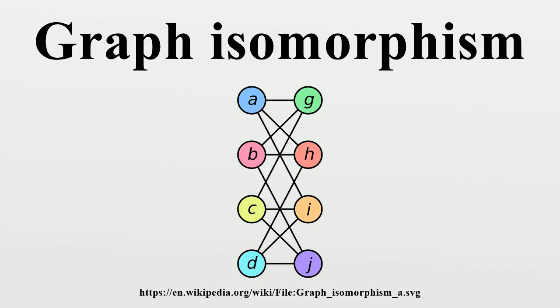For example, if a graph has exactly one cycle, then all graphs in its isomorphism class also have exactly one cycle. On the other hand, in the common case when the vertices of a graph are the integers 1, 2, ... n, then the expression may be different for two isomorphic graphs.